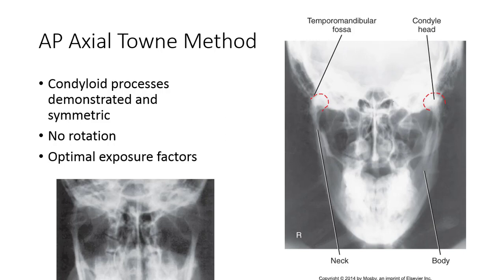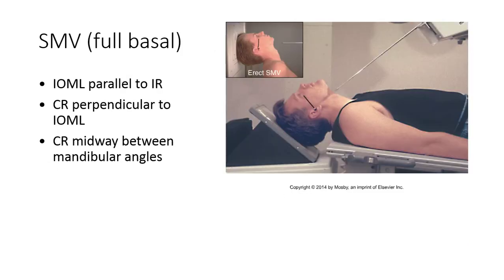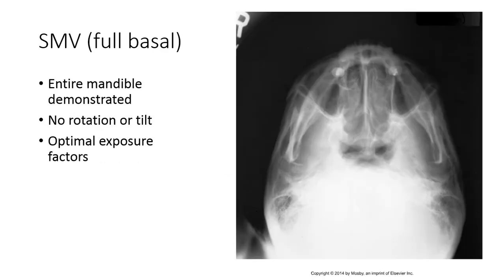Check your department protocols to determine if the mental point should be visualized in this view. The SMV projection is the same as all other SMV views covered up until this point in the course. Hyper-extend the neck to place the IOML parallel to the IR and center midway between the angles of the mandible. Ensure the MSP is perpendicular to prevent tilt, and the entire mandible should be demonstrated. Ensure the perpendicular plate is vertical to eliminate rotation of the cranium.